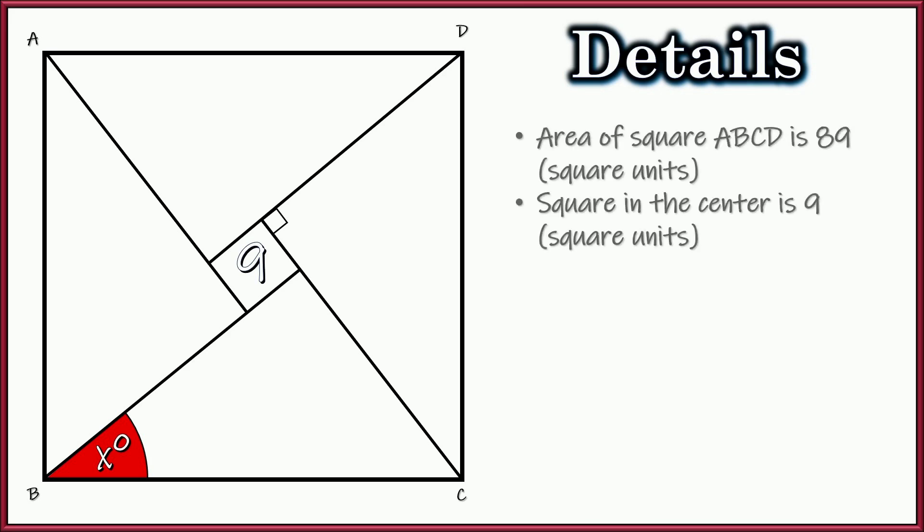We've got this square ABCD. It's got an area of 89. It's got a small little square in the middle with an area of 9. And our job is to find the measurement of the angle marked x degrees here in the bottom left-hand corner.